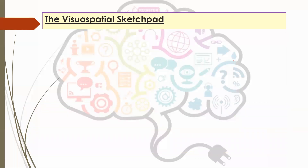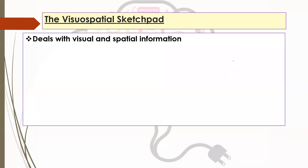The next part is the visuospatial sketchpad. This is on the other side of the model — you've got the phonological loop on one side and the visuospatial sketchpad on the other. In different diagrams you might see one on the left and one on the right, but it doesn't really matter. The visuospatial sketchpad deals with, as the name suggests, visual things — so things that you are seeing — and spatial information.